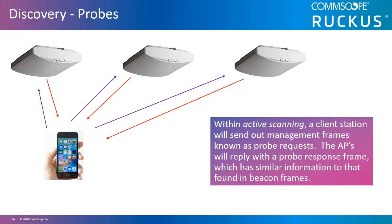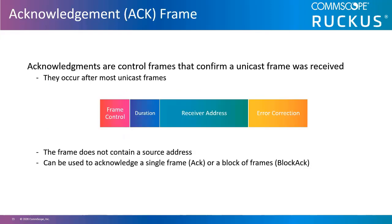A probe frame that does not include a service set identifier is called a null probe. These are used to get responses from all APs within the service set area regardless of the SSID being used. If an access point is not broadcasting its SSID as part of a beacon frame, many APs will ignore a null probe frame and not respond.